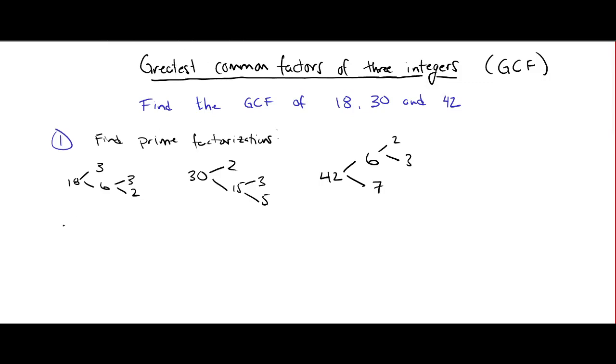And then the second step, we're going to look for common factors in the three factorizations here. So we've got 18, 30, and 42. Let's compare their factorizations.